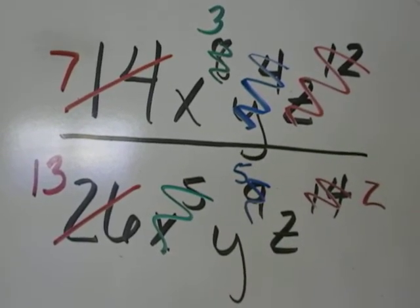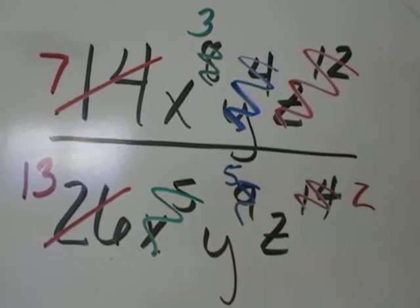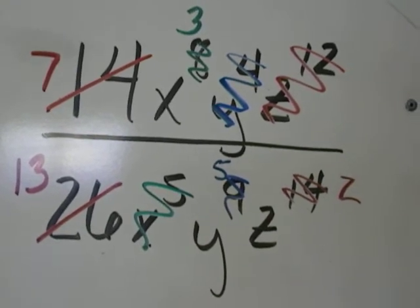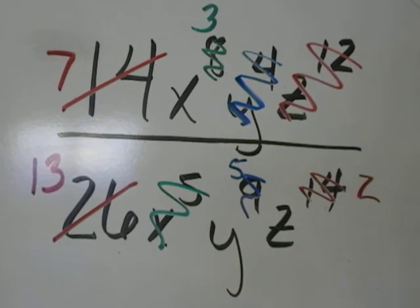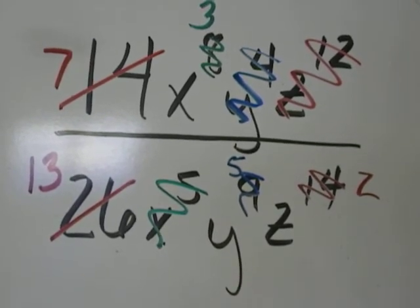8 minus 5 is 3, and it's positive, so the x's will still be on the top. 4 minus 9 is negative 5. That negative tells me that my y's are going to end up in the denominator. And 12 minus 14 is negative 2. Again, my z's will end up in the denominator.